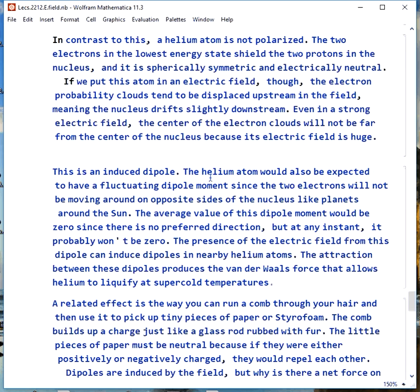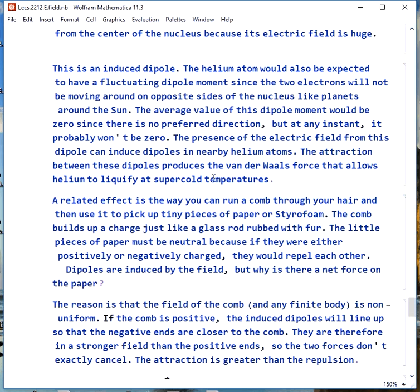This is an induced dipole. The helium would also be expected to have a fluctuating dipole moment because if you imagine taking a snapshot of where those electrons are, if we could locate them precisely, at one instant, it's very unlikely they'll be on exactly opposite sides of the nucleus. They'll just be in random spots, and they probably won't completely cancel each other out. That means we will have some dipole moment that fluctuates from instant to instant. Because that dipole moment will cause a field of its own, that will induce dipoles in nearby helium atoms, and the interaction between these dipoles produces the van der Waals force that you may have heard of. So that's what lets helium liquefy if you get down to a few kelvin.